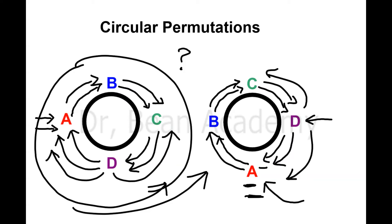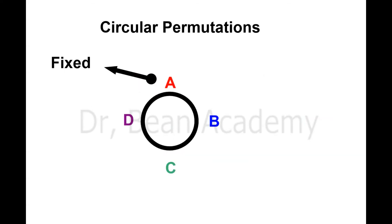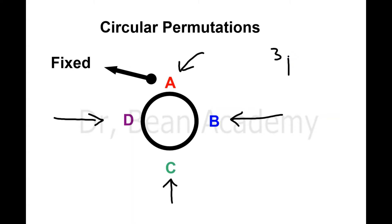To solve this confusion, here is the key point: we fix one letter. Out of the four given letters, we fix A at the top of the circle. It doesn't matter which position we fix A at, but we must fix it somewhere. Then we compute all possible permutations among the other three letters. For the remaining three, that is 3P3, which equals 6.